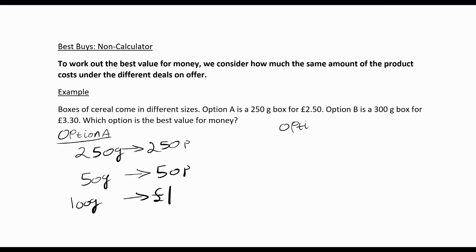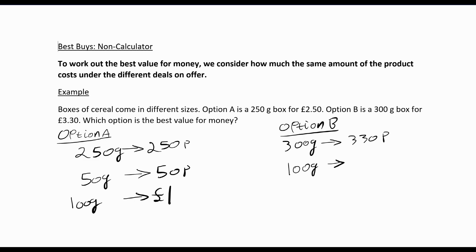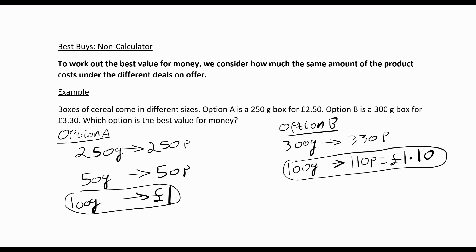Option B is a 300 gram box for £3.30, so 300 grams is 330 pence. To work out how much 100 grams costs, we divide by 3: 300 divided by 3 is 100, and 330 divided by 3 is 110p, which is £1.10. So option A has 100 grams for £1, and option B has 100 grams for £1.10, which is more expensive. Therefore option A is the best buy, because it's 10 pence cheaper for every 100 grams.